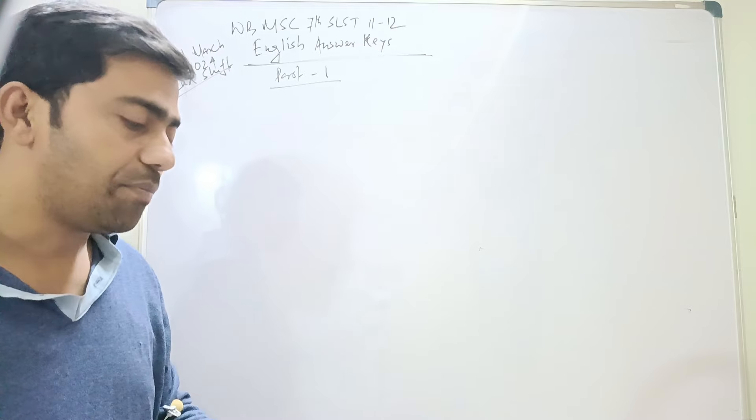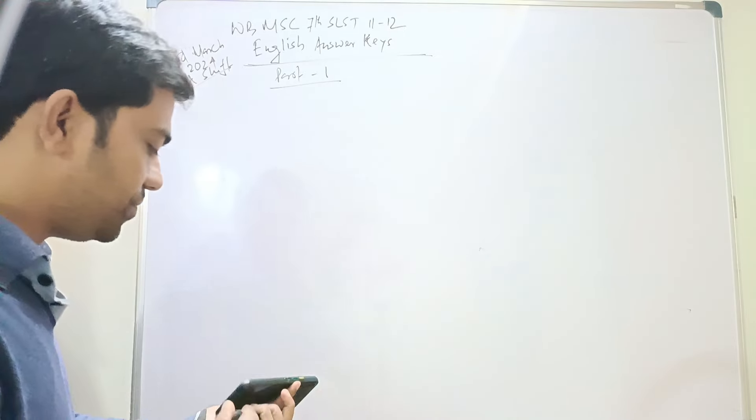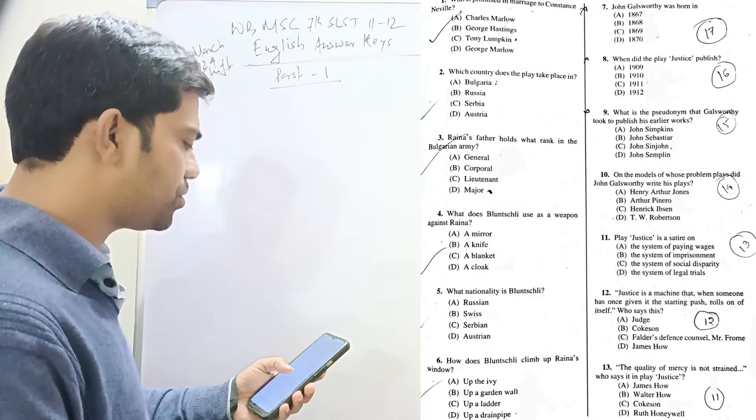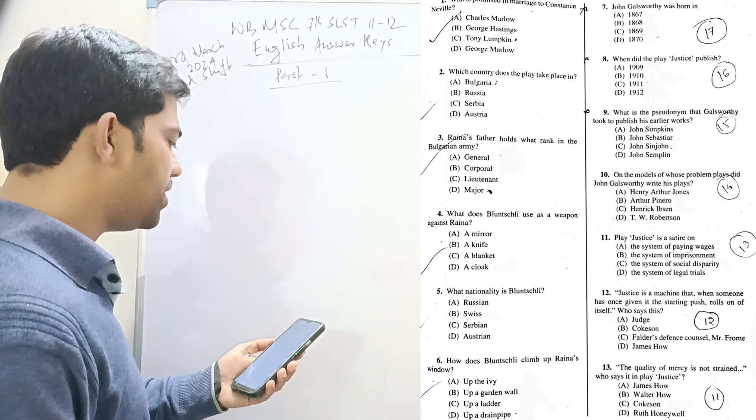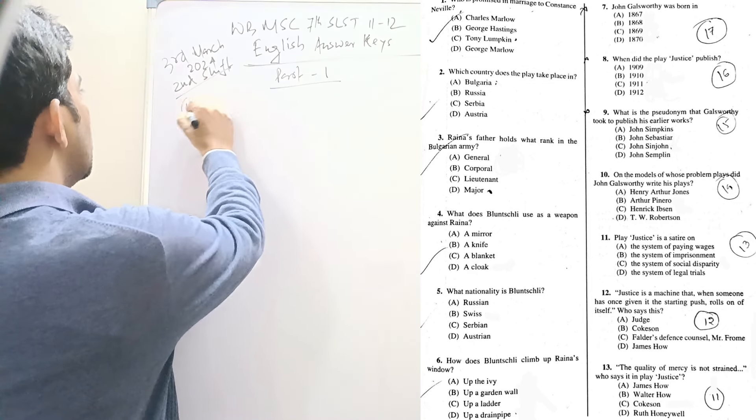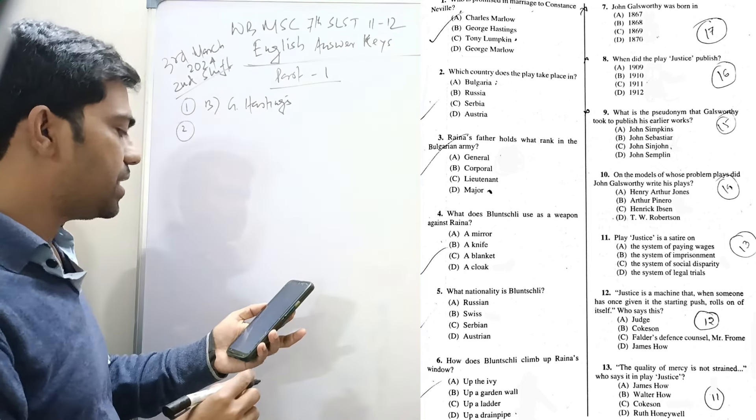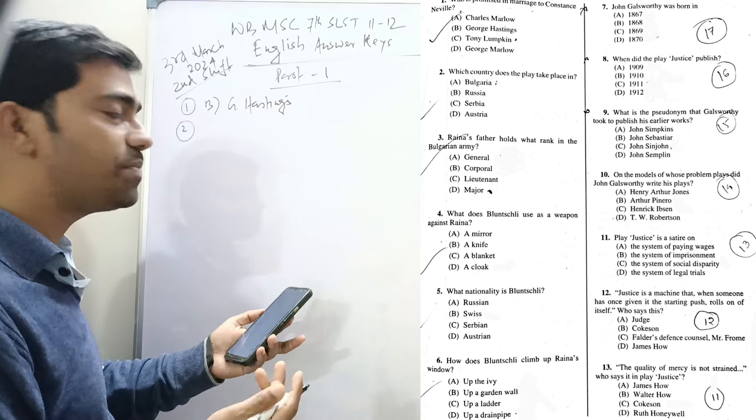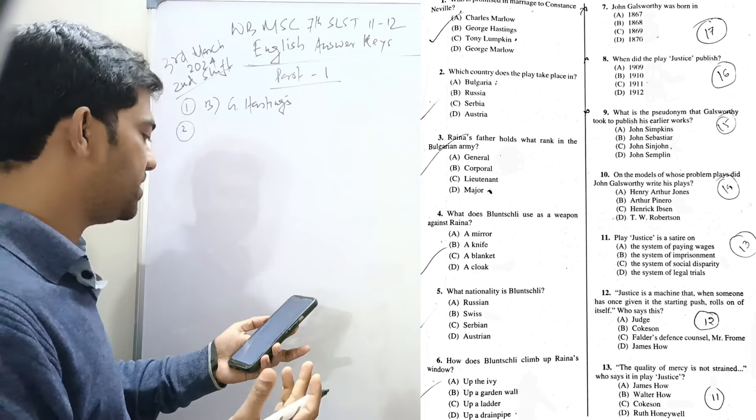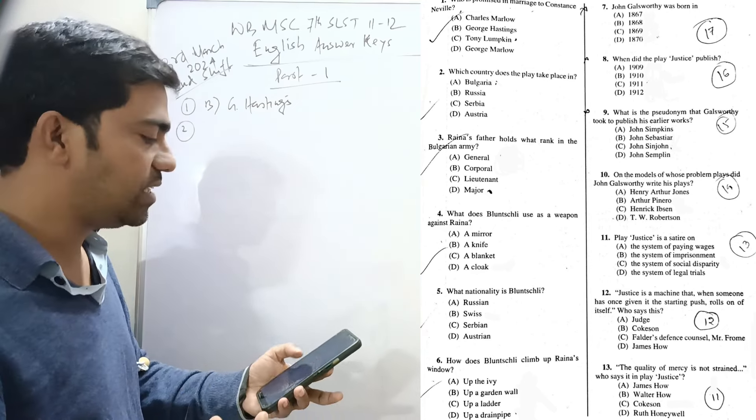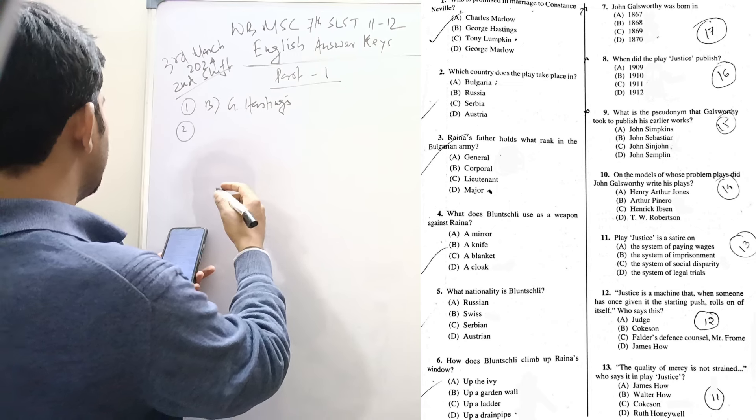The first question is: who is promised in marriage to Constance Neville? Second question: in which country does the play take place? Which play? The particular play name should be given here. From the options we can assume it is from Arms and the Man, so it will be Bulgaria.